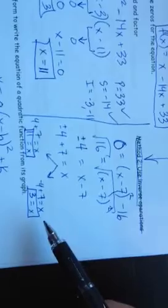My second answer is negative 4 plus 7 equals x. Negative 4 plus 7 is just 3.